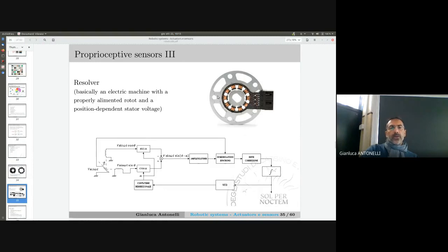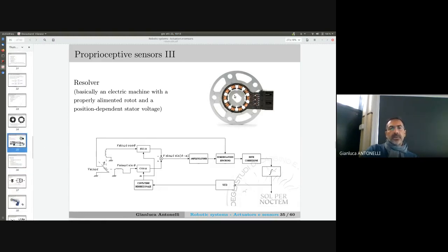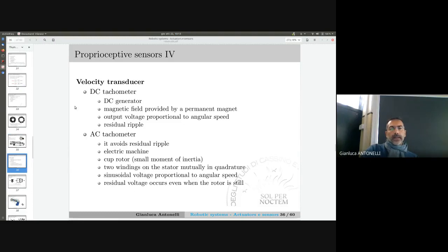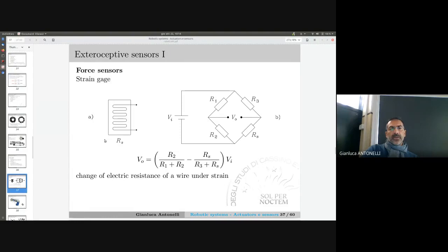On the other hand, the incremental encoder only needs three - one for the zero and then two in order to also detect the direction of motion. You just count the transition from transparent to opaque. We can have resolvers. This is a very small resolver that is an electric machine we can use to measure velocity. Then we can have tachometers to measure velocity.